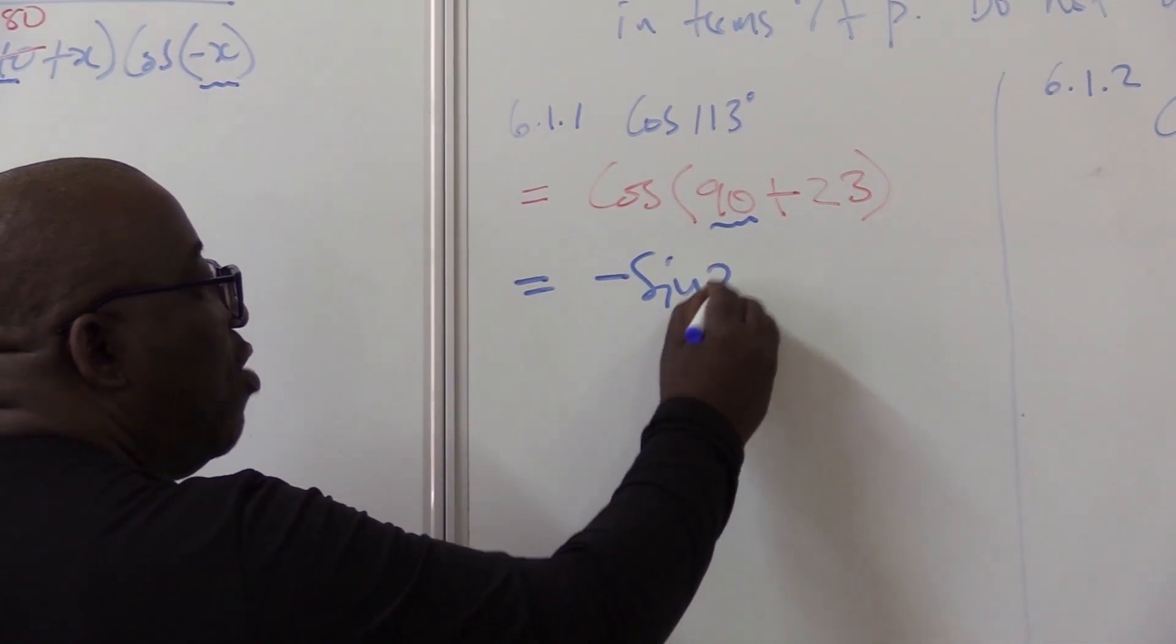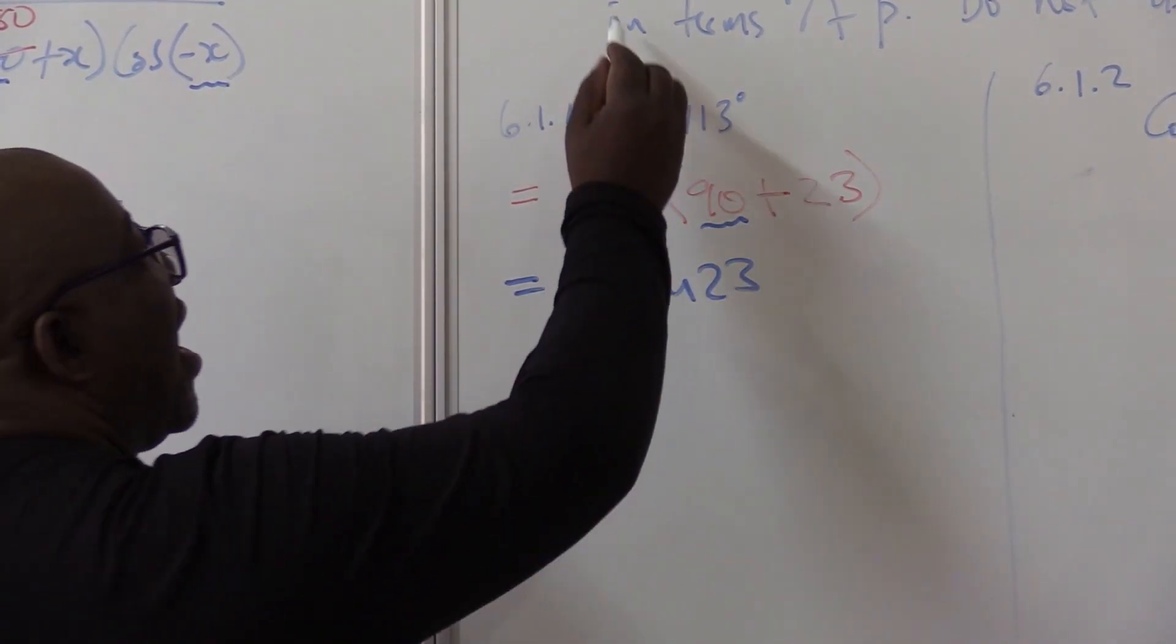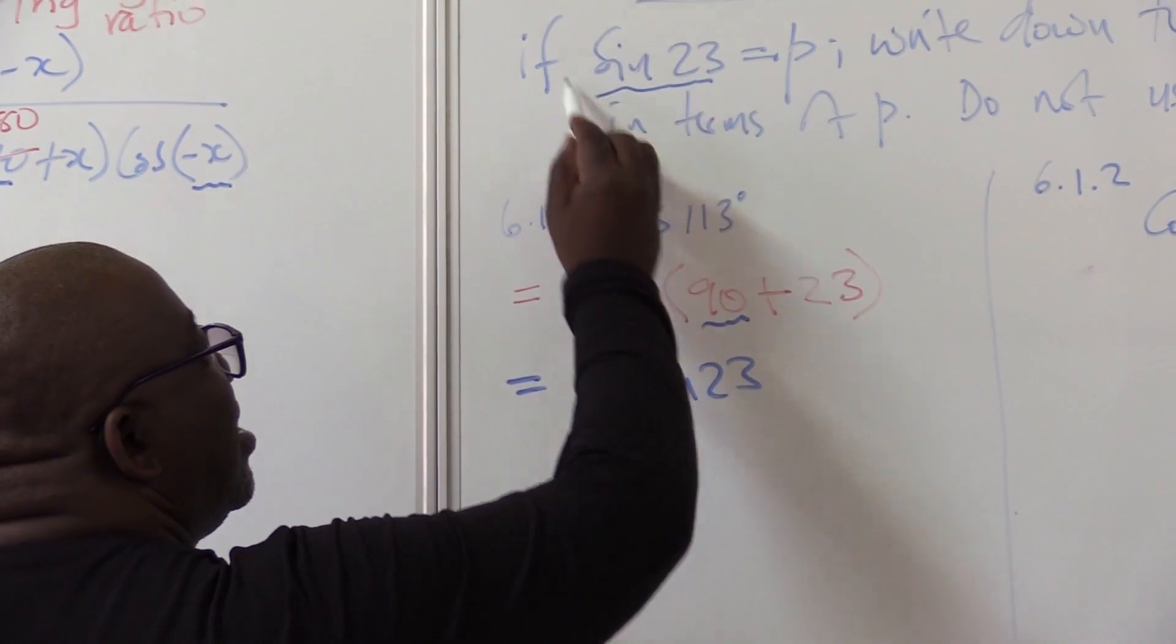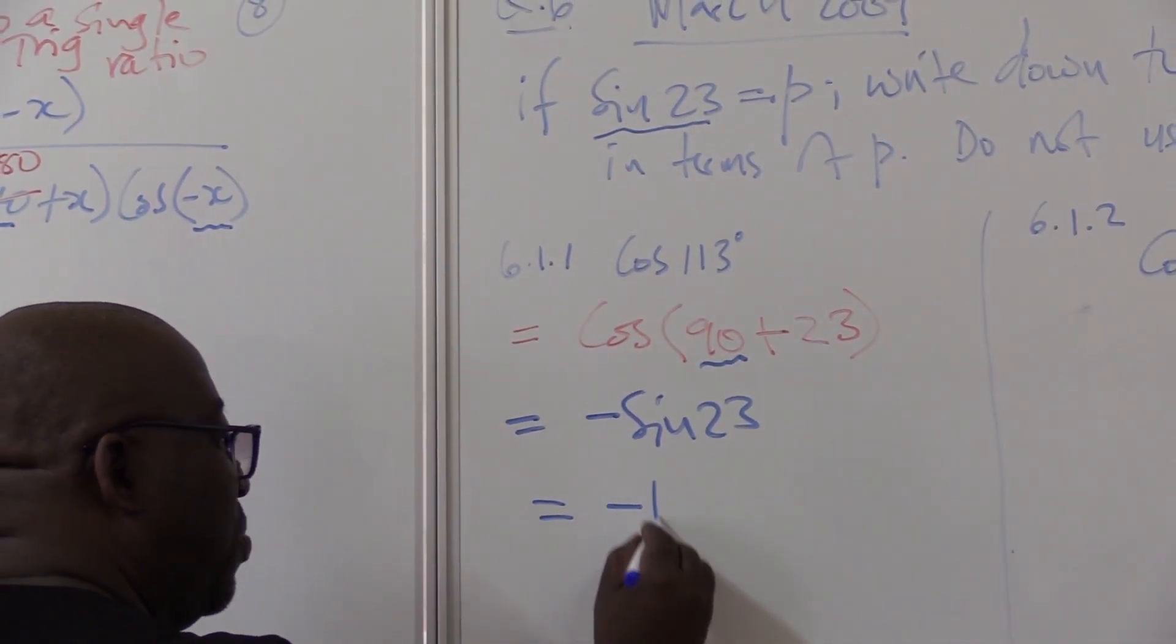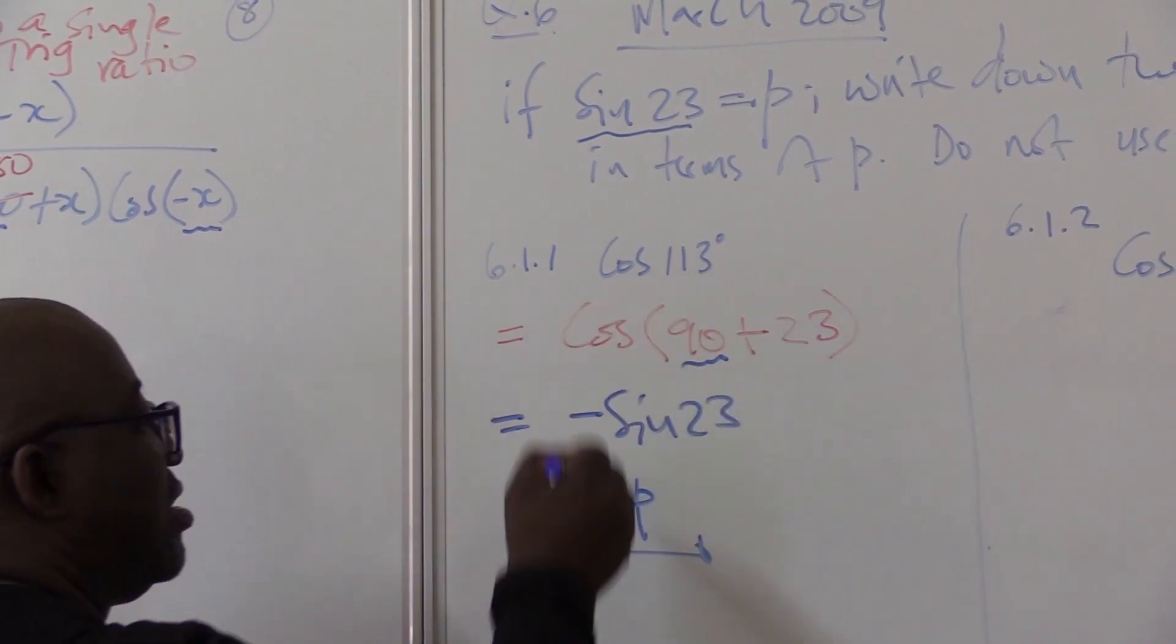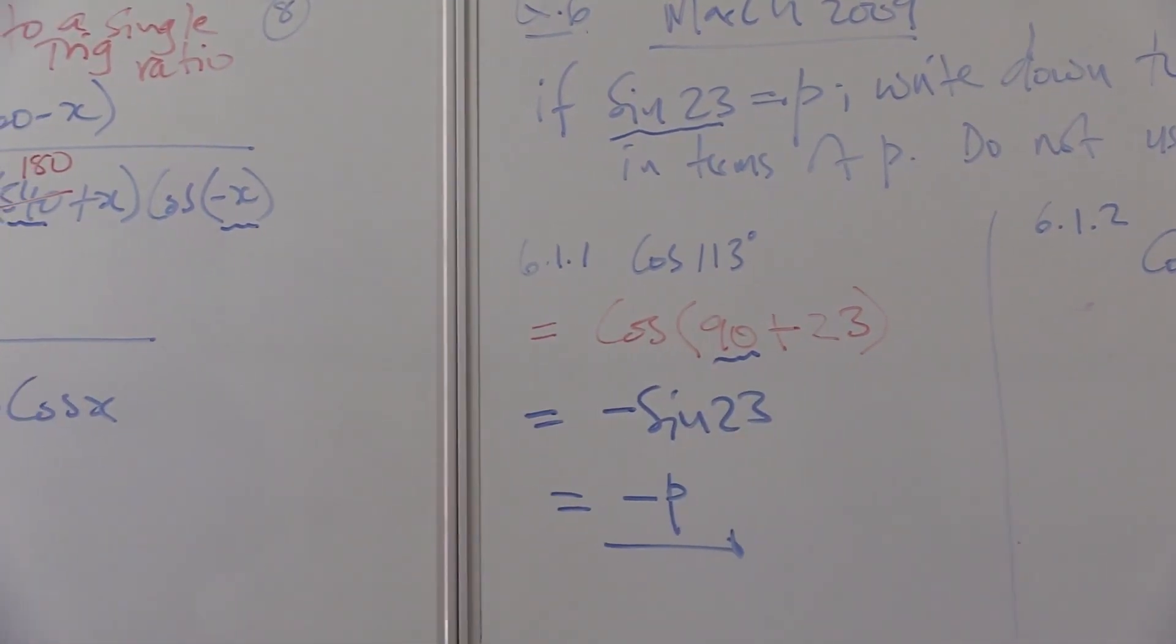cos will change into sine of 23. Here comes this 23. Wherever I see 23, I push in P. So the answer in this case will be minus P. I've expressed this in terms of P.